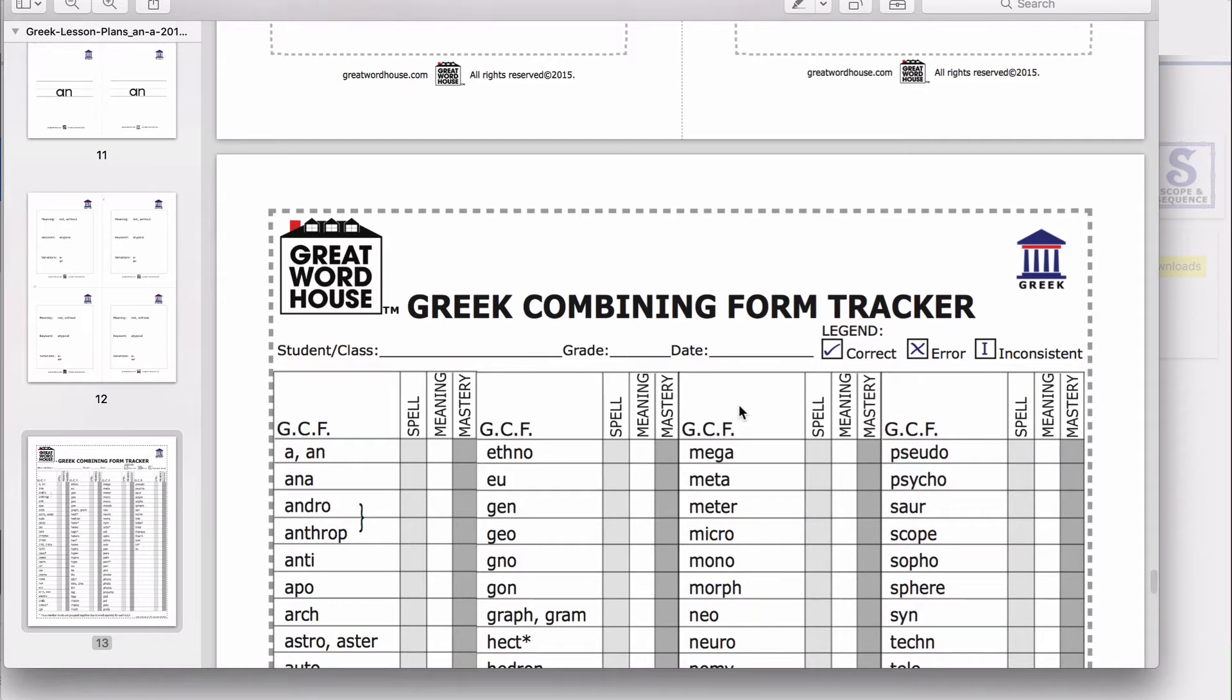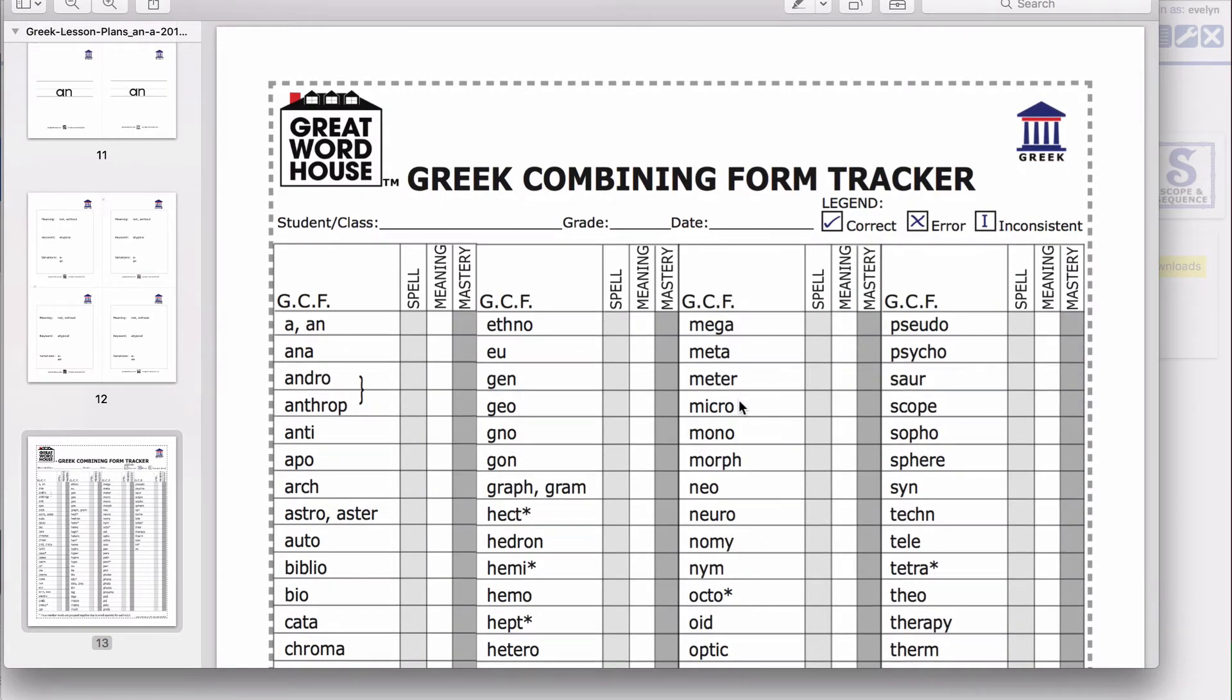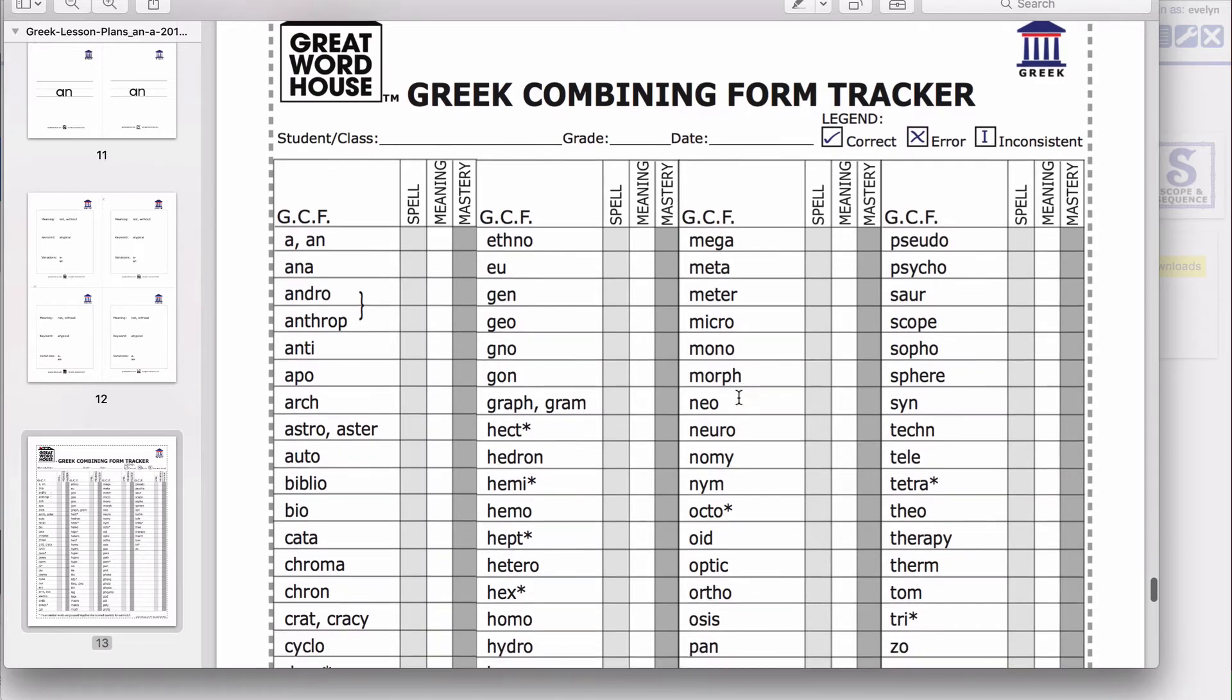The lesson plan also has a Greek combining form tracker sheet to record whether the student has mastered the spelling and the meaning of the Greek combining form.